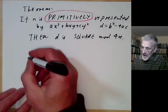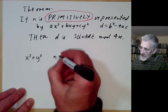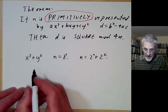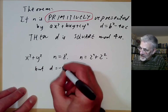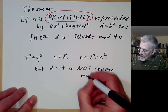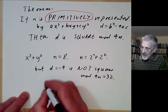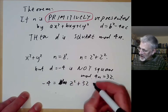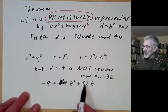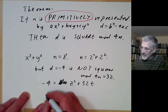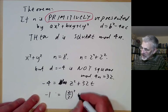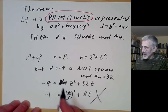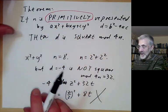Suppose we take the form x squared plus y squared and n equals 8. Then n is represented, since 8 equals 2 squared plus 2 squared. But d equals minus 4 is not a square modulo 4n, which is 32. To see this: if minus 4 equals z squared plus 32t, then z must be even, and dividing by 2 gives minus 1 equals (z/2) squared plus 8t, meaning minus 1 is a square modulo 8 — which we know is false. So without the primitive condition, the theorem fails.